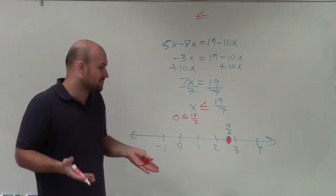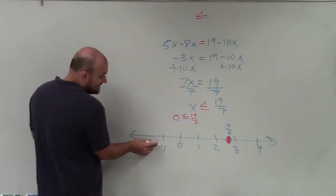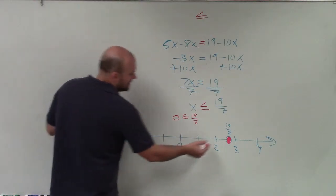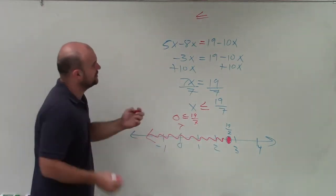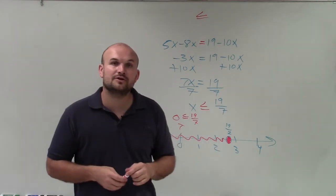Yeah, we said 19 divided by 7 is like 2 and a decimal, right? So 0 is obviously, or any negative number is obviously going to be less than. So that's true. Therefore, we're going to shade to your left. So there you go, ladies and gentlemen. That is how you solve and graph your multi-step inequality.